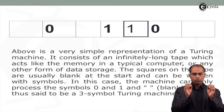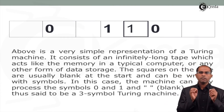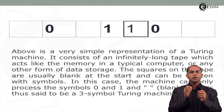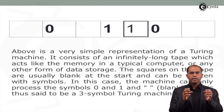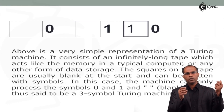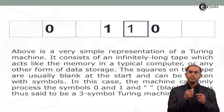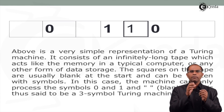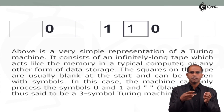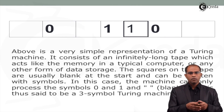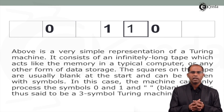To recap: Alan Turing designed a hypothetical mathematical model in 1936 for implementing computational concepts. He thought of a computer as having input, a data processor, and output. He later refined this to a programmable data processor, where the program can be changed while the data remains the same. The three-symbol Turing machine uses 0, 1, and blank space.